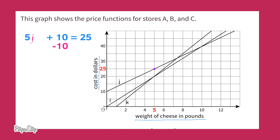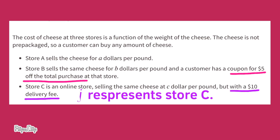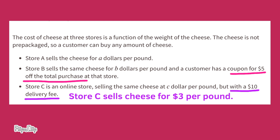Ten minus ten cancels out, leaving five J equals twenty-five minus ten, which is fifteen. Since there's only one step left, we now have a one-step equation: five J equals fifteen. Dividing both sides by five gives us J equals three. J represents Store C, which sells cheese for three dollars per pound.